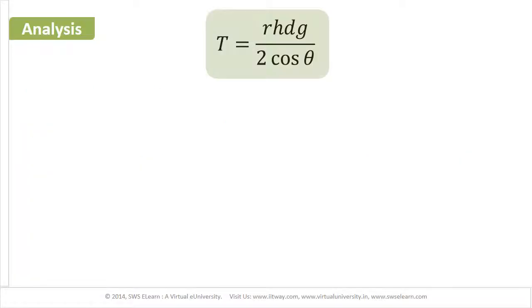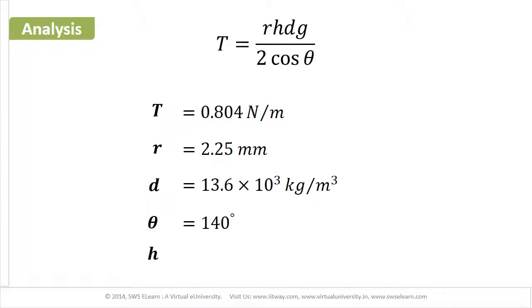In this equation, there are in all 5 parameters. Therefore, if values of any 4 parameters are given, the value of the 5th parameter can be found out by solving the equation.